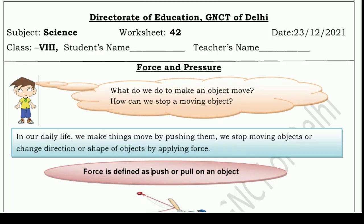Hello and welcome to Lavneesh Sarki class. This is Direct Rate of Education GNCT of Delhi's worksheet number 42, and it is only for class 8 students. It is taken from the subject Science and we will learn and understand the topic force and pressure in this worksheet.